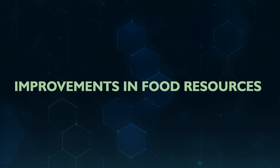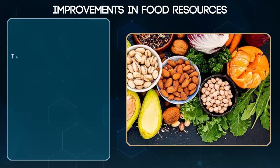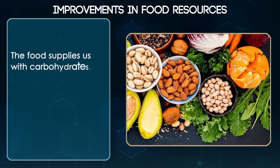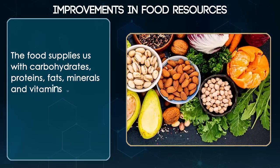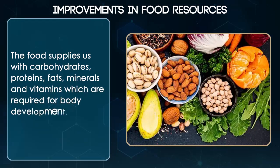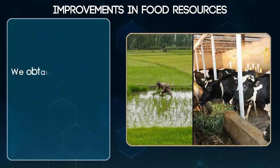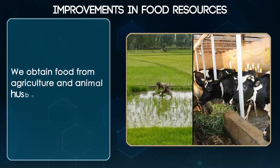Improvements in Food Resources. The food supplies us with carbohydrates, proteins, fats, minerals and vitamins which are required for body development, growth and health. We obtain food from agriculture and animal husbandry.